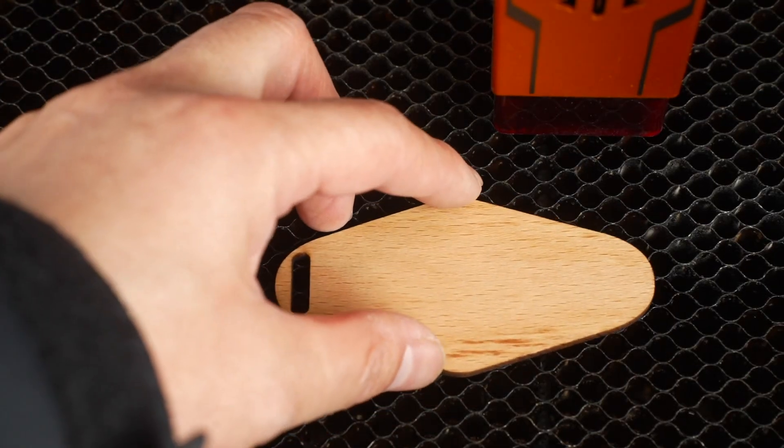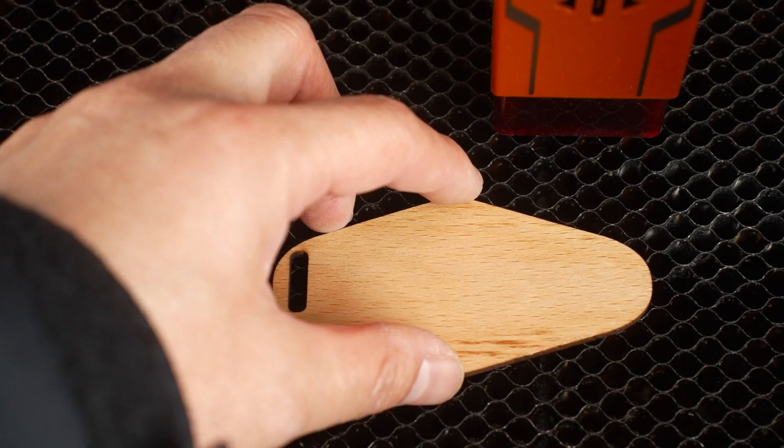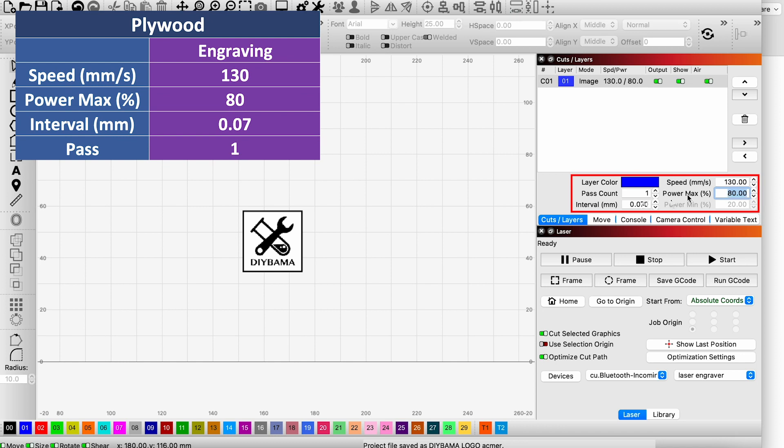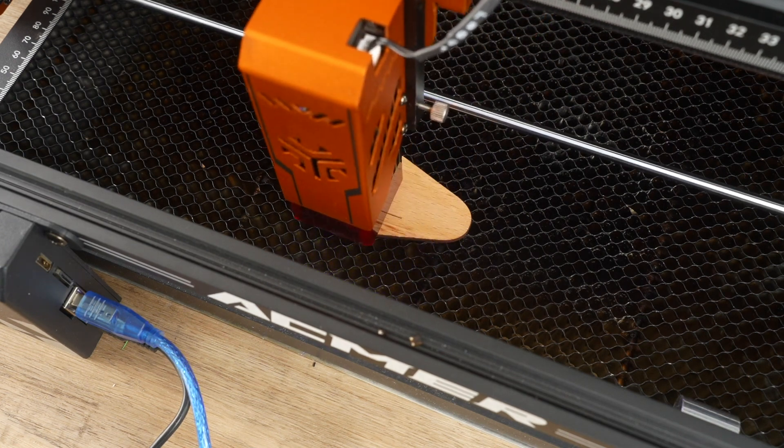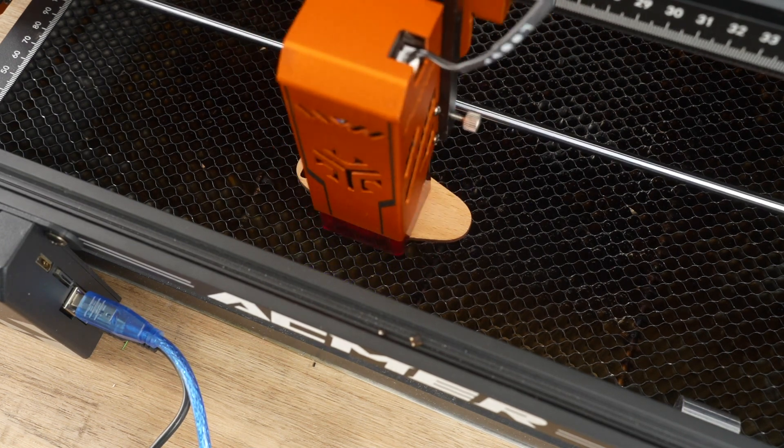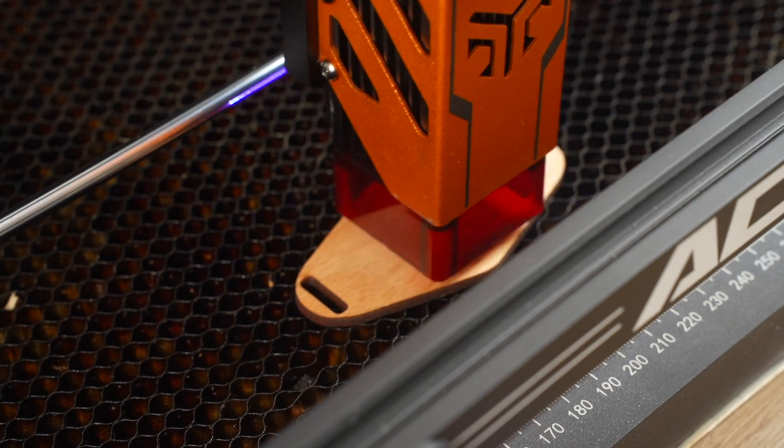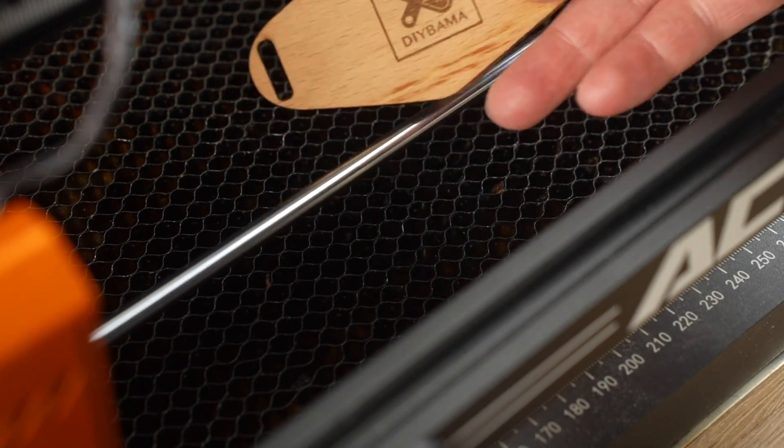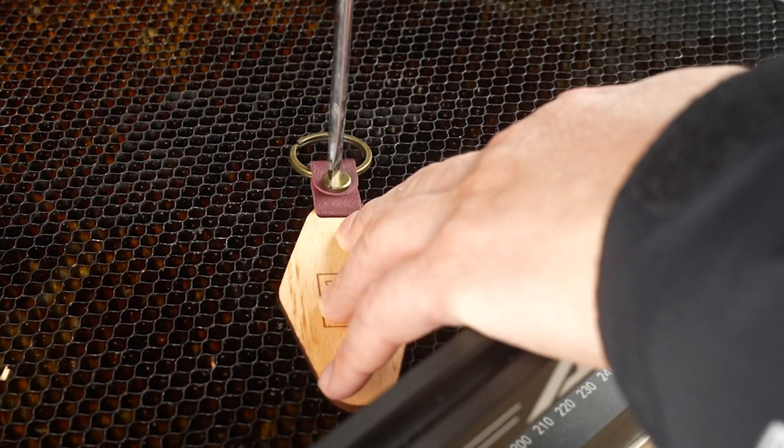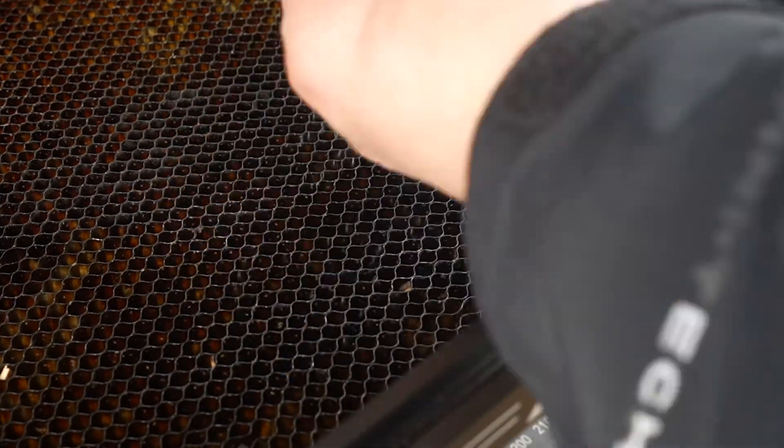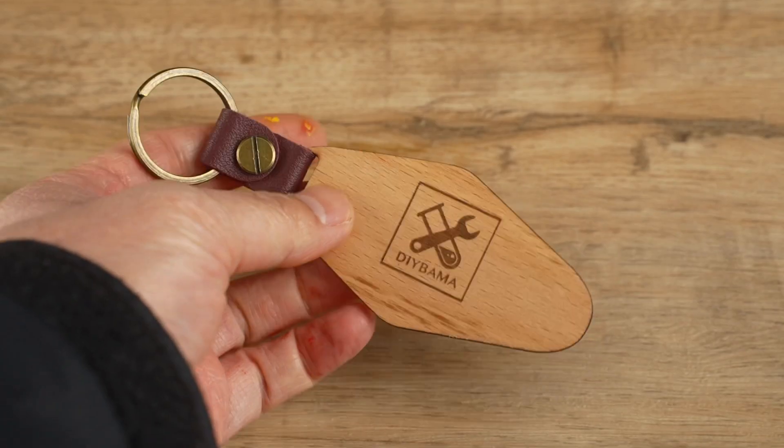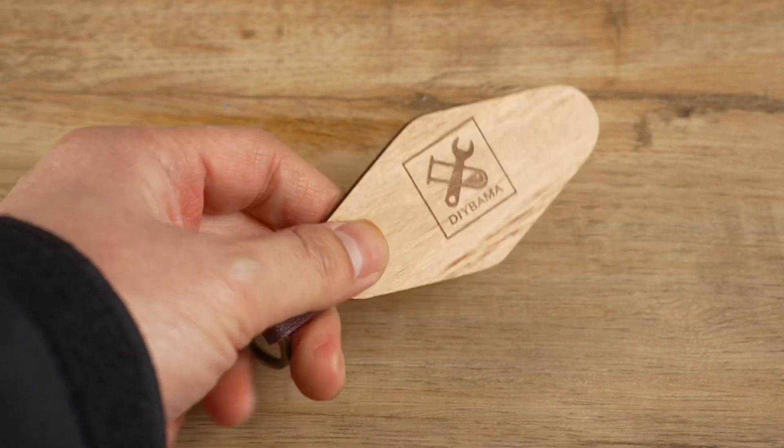After that, we attempted to engrave an image on plywood. I adjusted the speed to 130mm per second and set the power to 80%, with an interval of 0.07mm. Now, you can have a tailor-made keychain.